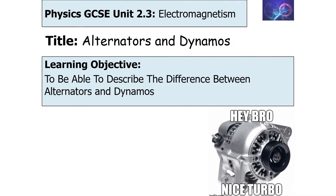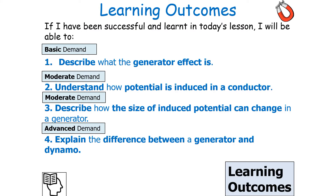In today's lesson, we're going to look at describing the difference between alternators and dynamos. If we've been successful, we should be able to describe what the generator effect is, understand how potential is induced in a conductor, describe how the size of the induced potential can change in a generator, and explain the difference between a generator and a dynamo.